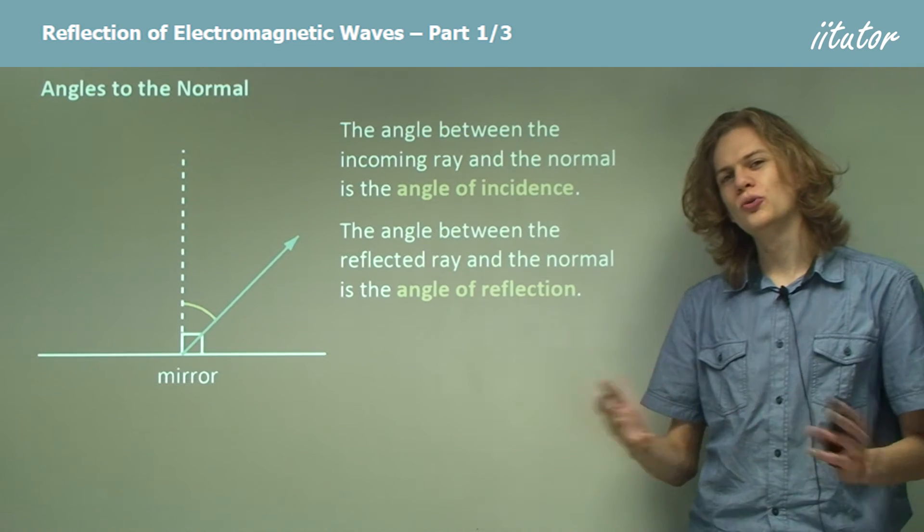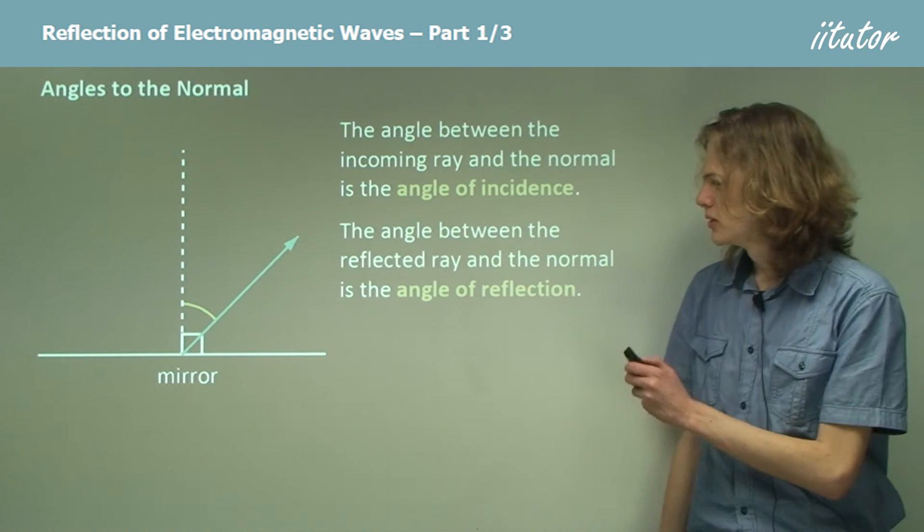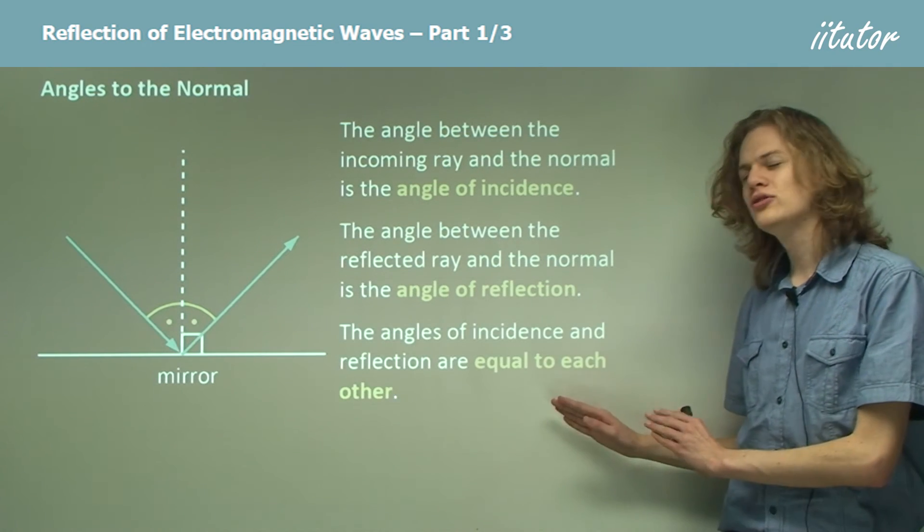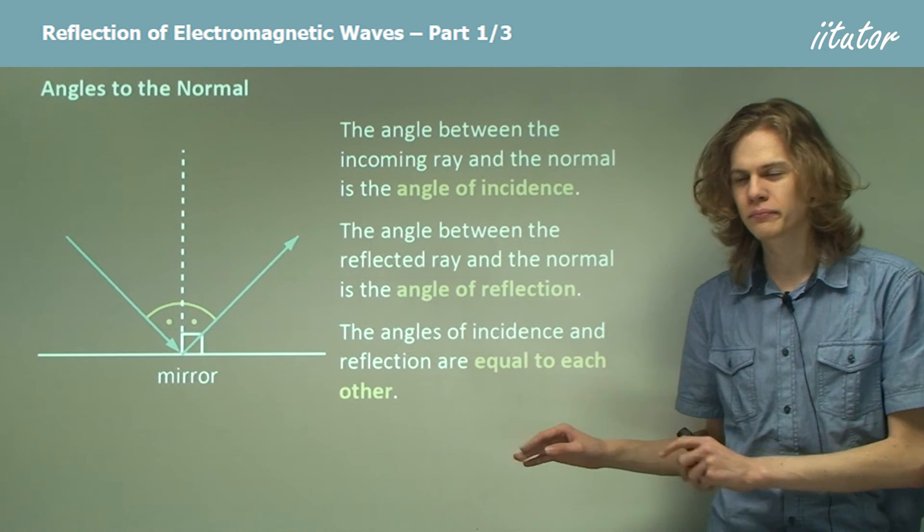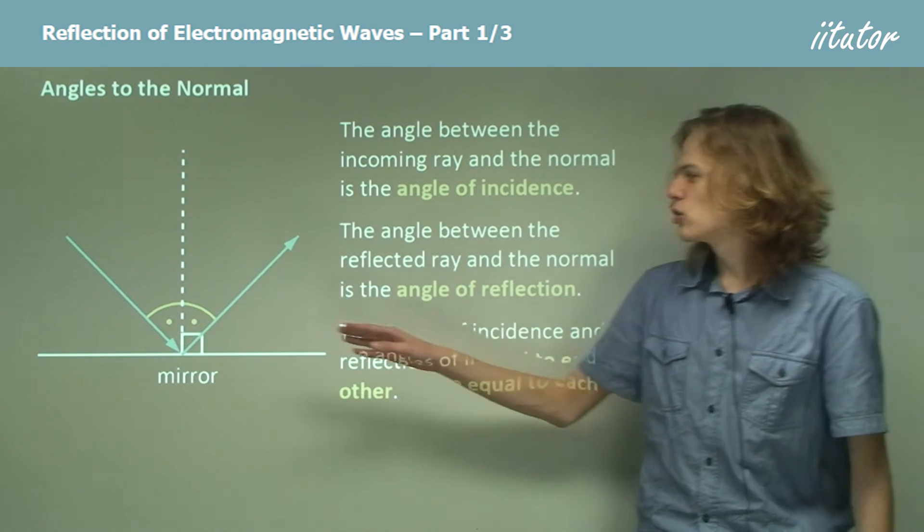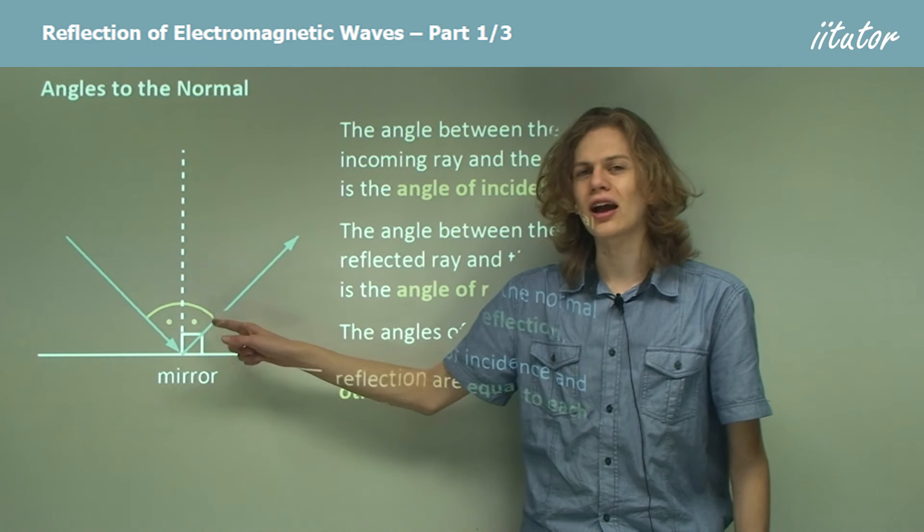Now, how do these two angles relate to each other? Well, it turns out that they are always going to be equal to one another. That is, the angle of incidence equals the angle of reflection.